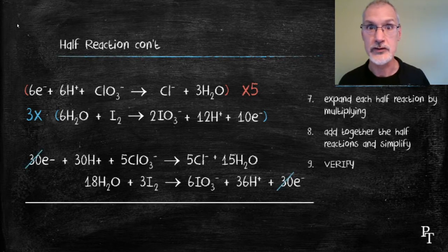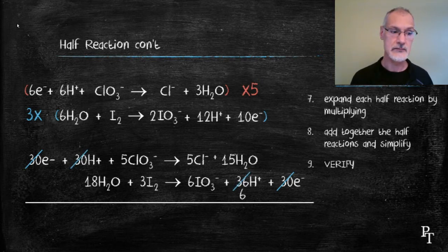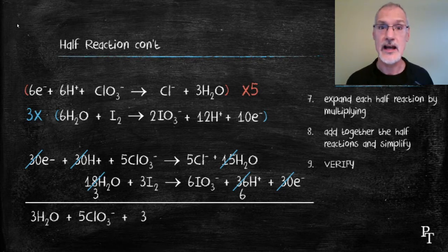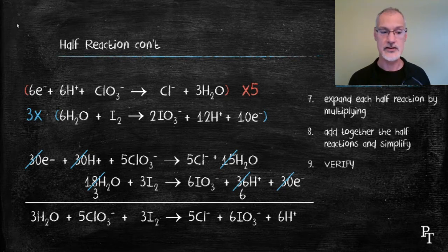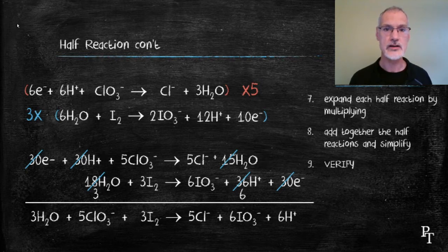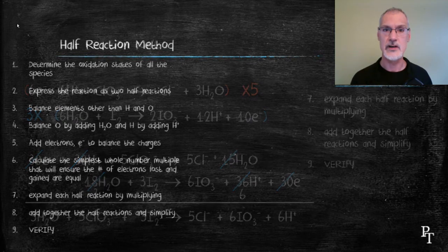I'll do a little simplifying before putting them together. The 30 electrons on both the product and reactant sides cancel out. The 36 hydrogens on one side can be reduced with the 30 on the other down to six. Similarly, the 18 and 15 water molecules can be reduced down to three water molecules. I'm now in a position to add these two equations together to get the overall reaction. It's useful at this point to verify that the equation is balanced by checking both the number and types of atoms on both sides. Equally important is checking that the charge on both sides is also balanced — in this case, the reactant side has a total charge of minus five, and the product side also has a total charge of minus five.